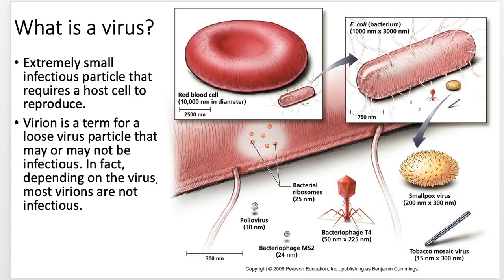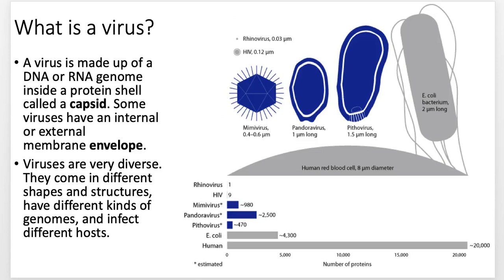A virus has a DNA or RNA genome and it can be single-stranded or double-stranded for either of those. Normal animals like us have double-stranded DNA — that's what most organisms have. But viruses are really weird. They can have single-stranded DNA, double-stranded RNA which is very strange, or they can have positive or negative sense RNA.